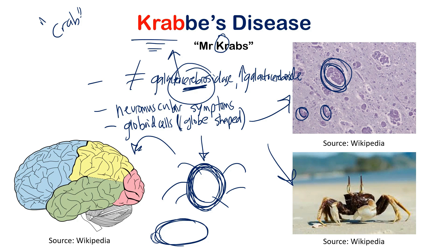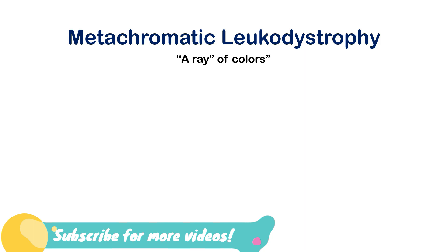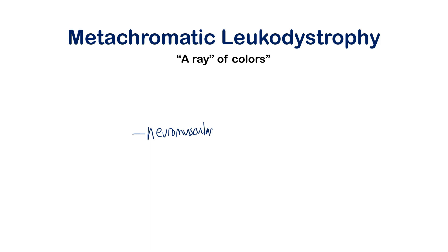They might show you a picture and ask you to identify it, so knowing globoid cells helps confirm Krabbe's disease. One more defining feature: Krabbe's disease typically presents at less than six months of age. Think of Mr. Krabs from SpongeBob — young kids watch that show. This age of onset becomes really important when comparing to the next disease, metachromatic leukodystrophy, which is very similar but lacks globoid cells on histology.